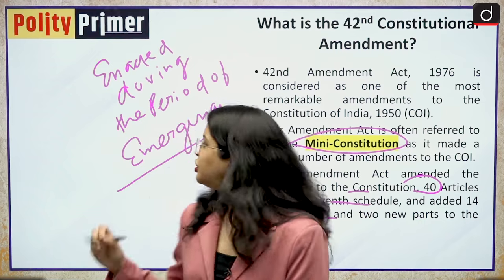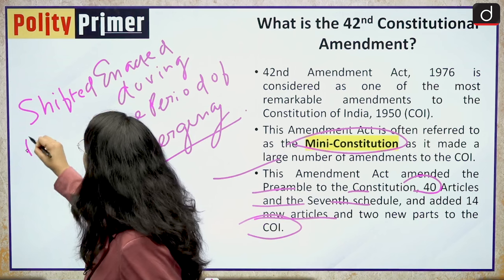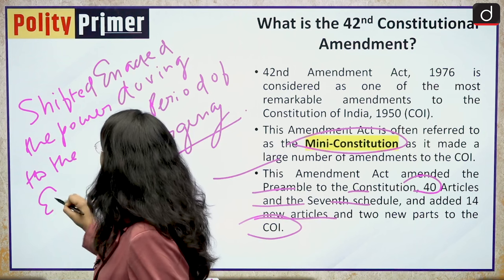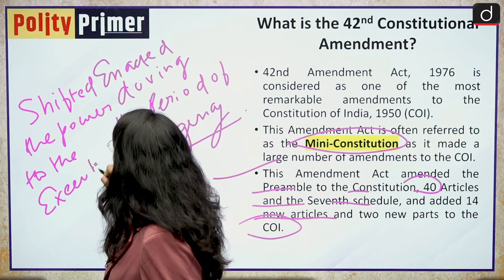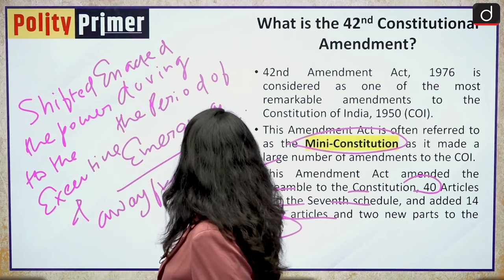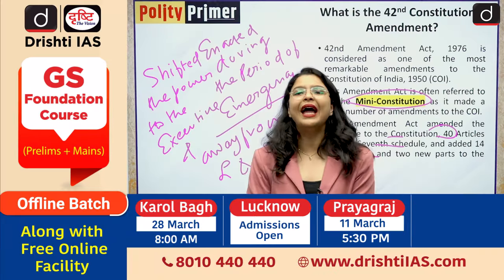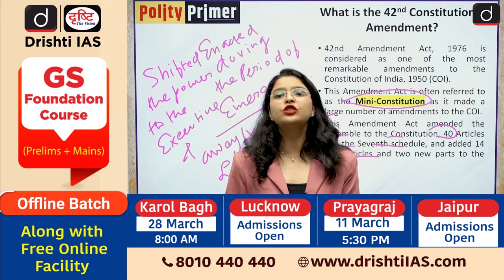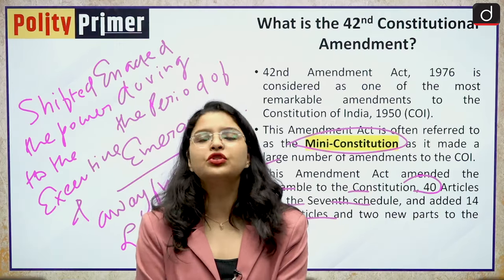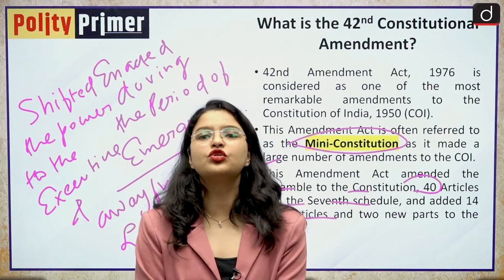Basically, this amendment act shifted the power to the executive and away from the legislature and judiciary. After this amendment act was enacted, the central government's supremacy became even more firm in the Indian constitution, and that was the main purpose behind the enactment of the 42nd Constitutional Amendment Act.